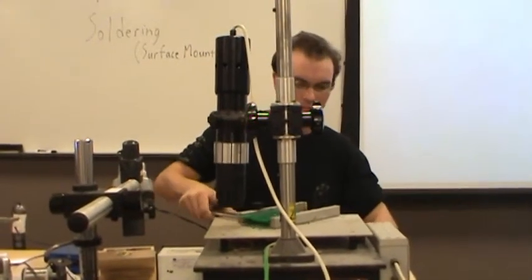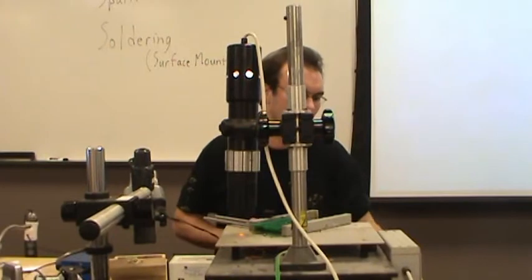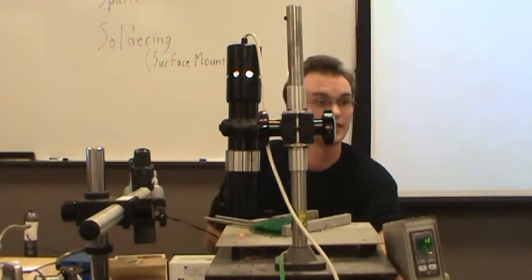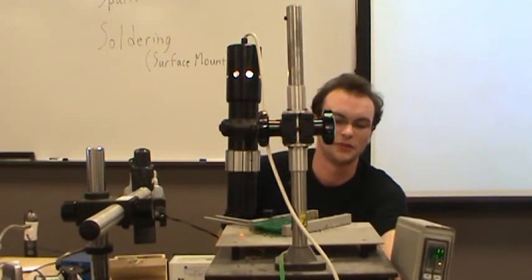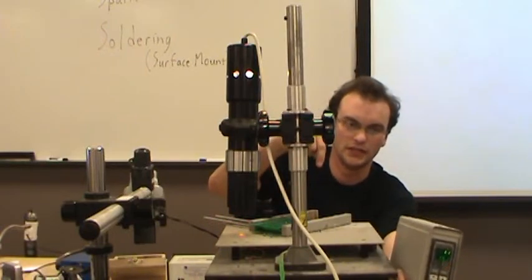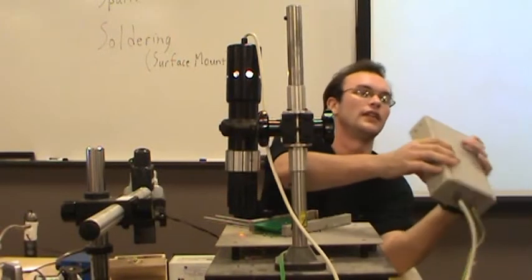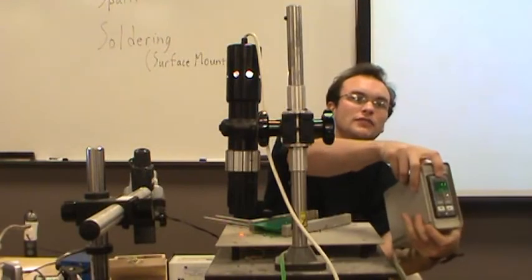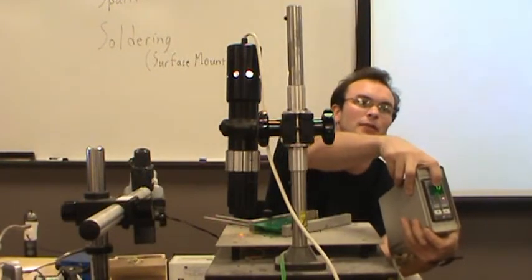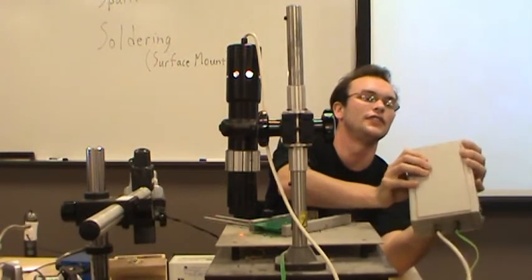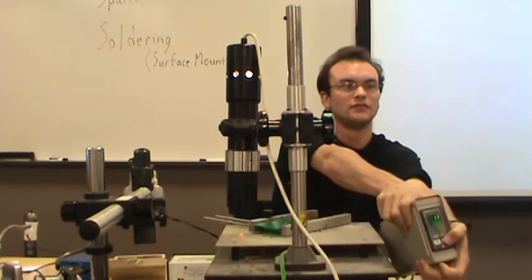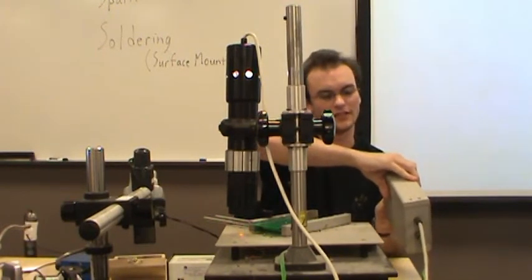And it also has down here a ceramic heating plate that preheats the underside of your board. So we'll take the board. There's a switch on the front. When you turn it on, you'll see this guy come on. And this is a temperature set point controller for the ceramic heater on the underside.